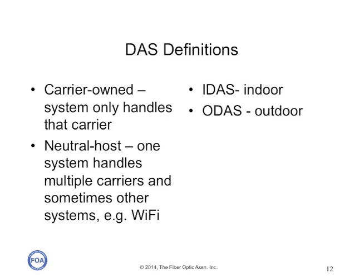There are generally two types of DAS. What's called carrier-owned means that one system provider installs the system and the system only handles that carrier — needless to say, that's fairly unusual these days. Most are neutral host systems, where one system handles multiple cellular carriers and sometimes even other systems like Wi-Fi. In the business, you'll also see two acronyms: IDAS for indoor and ODAS for outdoor.